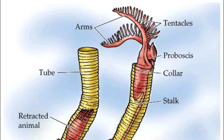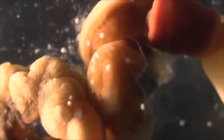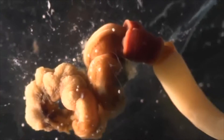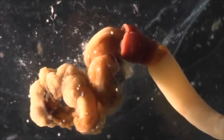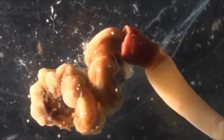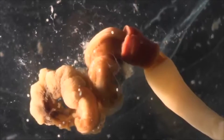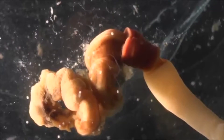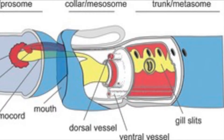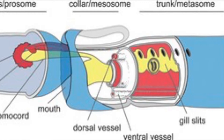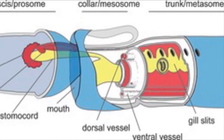Enteropneusta are solitary organisms that undergo sexual reproduction involving two sexes and egg fertilization. Adult acorn worms share similar characteristics to chordates — they contain pharyngeal gill pores, a partially neurulated nerve cord, and a stomochord.